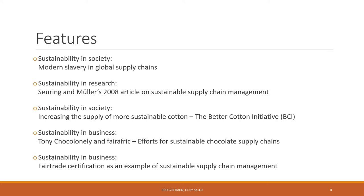This chapter comes with a number of features. The first is a feature on sustainability in society about modern slavery in global supply chains — a very unfortunate topic, as most people think slavery is a thing of the past, but it is not. We'll also discuss the 2008 article by Stefan Seuring and Martin Müller on sustainable supply chain management in the feature on sustainability in research, where they develop the two prototypical strategies mentioned earlier.